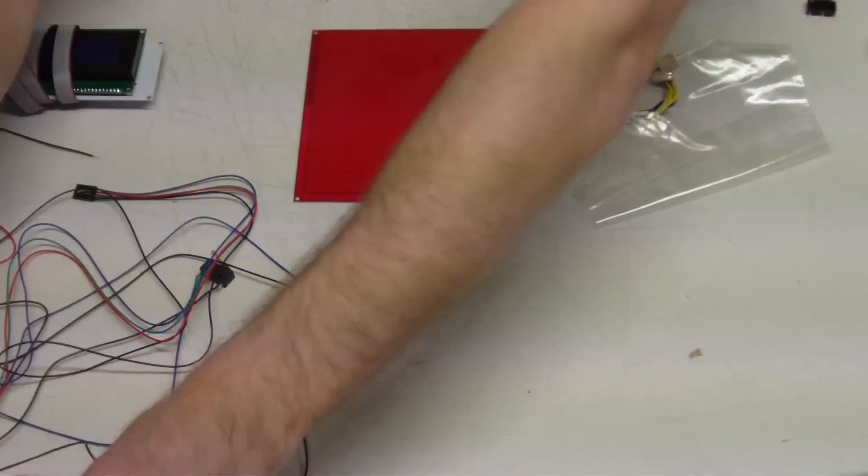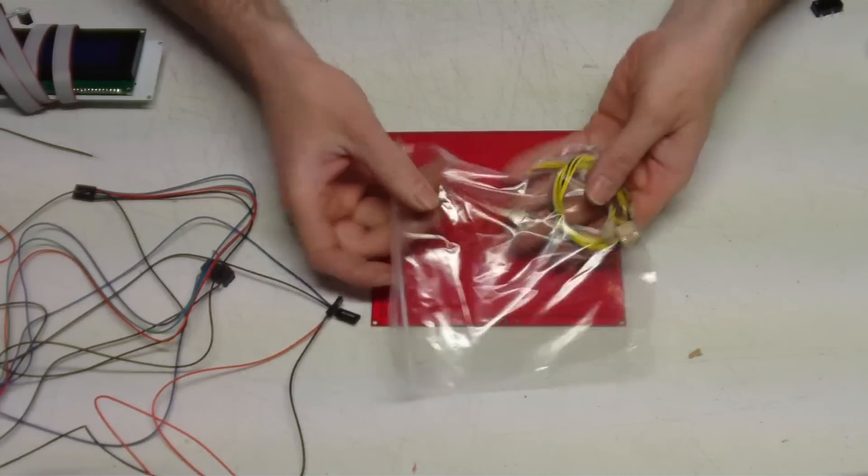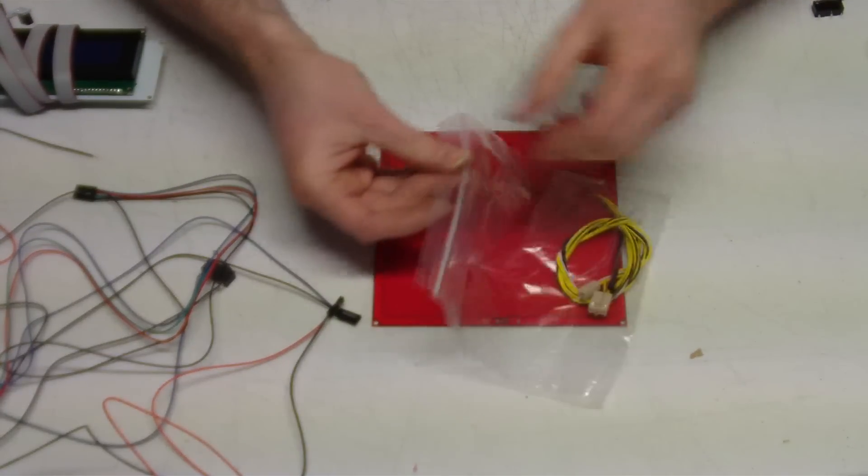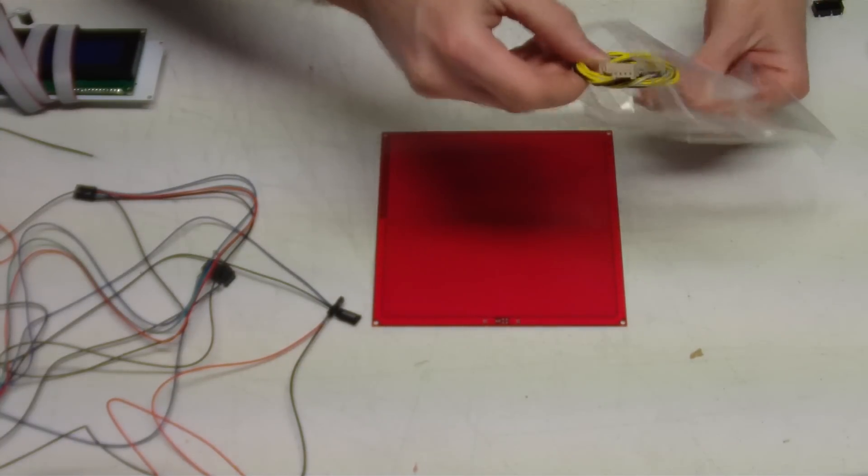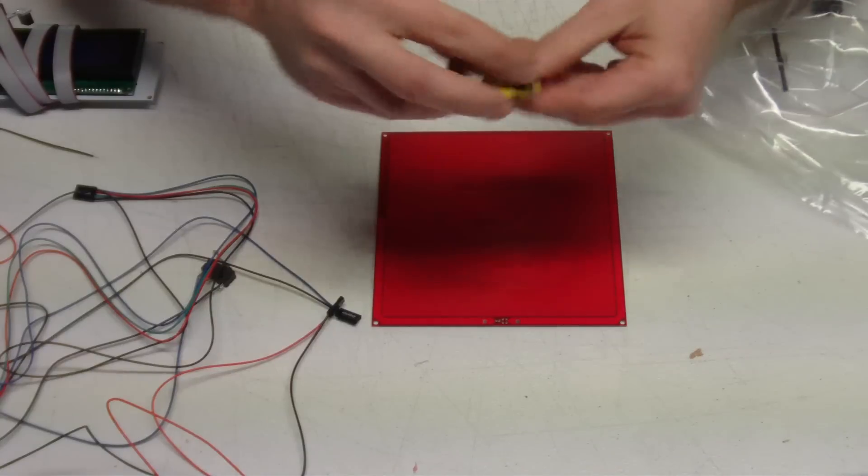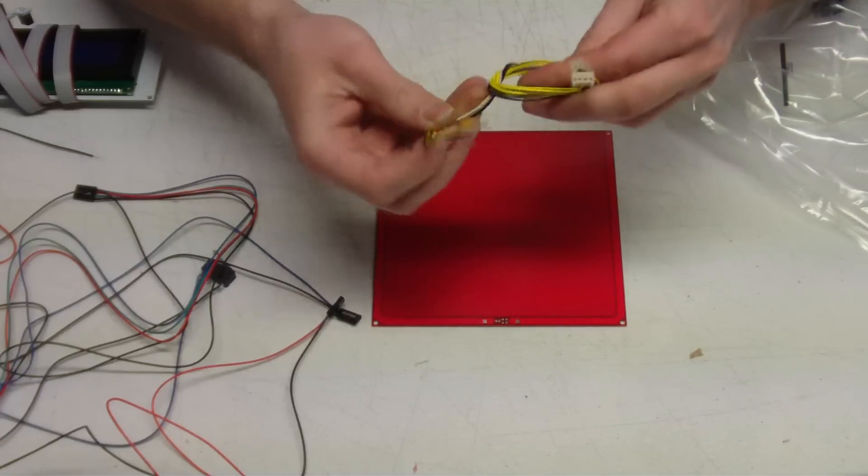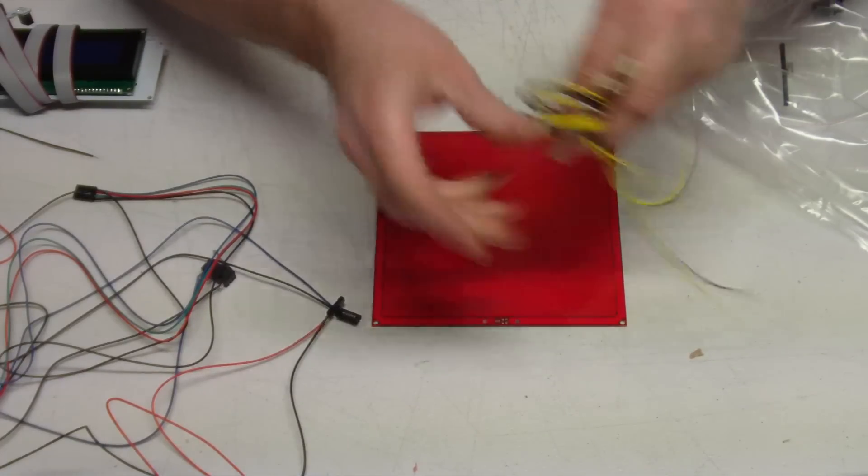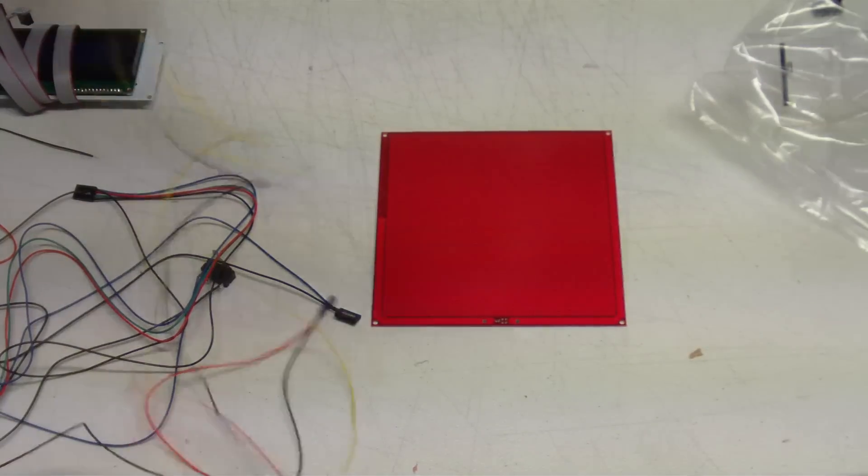To start, we're going to start with our heat bed. This is our little 6 inch heat bed. Typically if you're going to order an install kit, you're going to get a bag of wires to go with it. For the heat bed we're going to grab the set of wires that has four connectors on it or four pins on the connector.